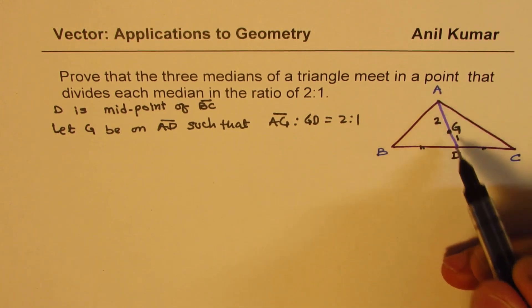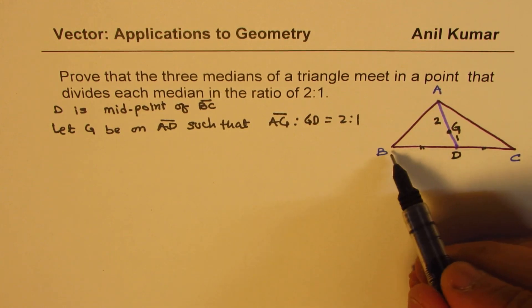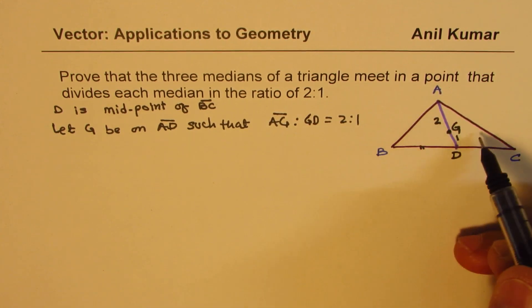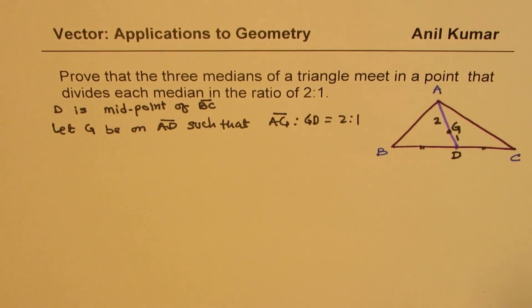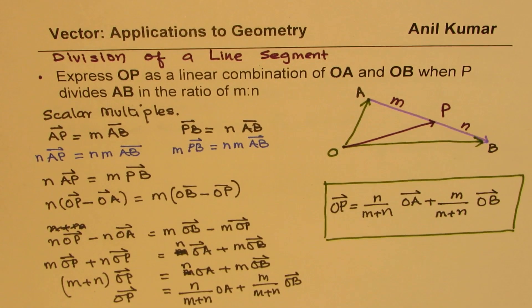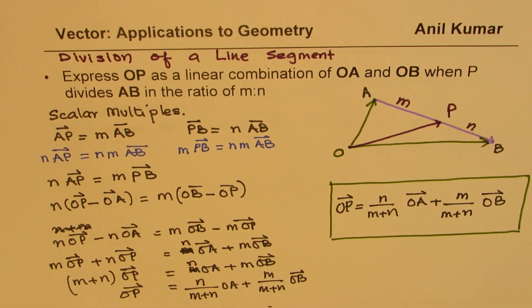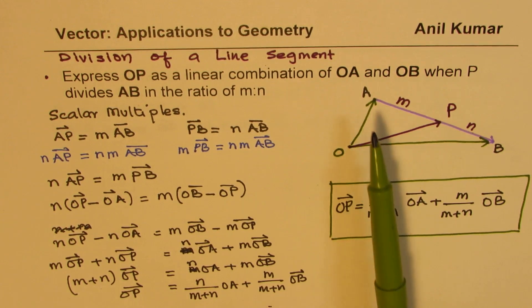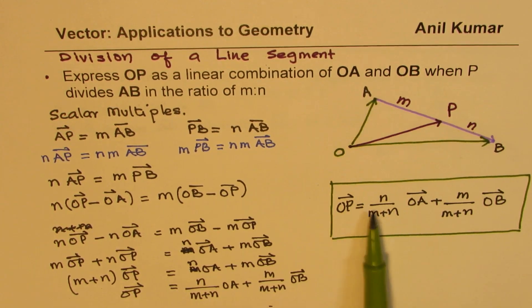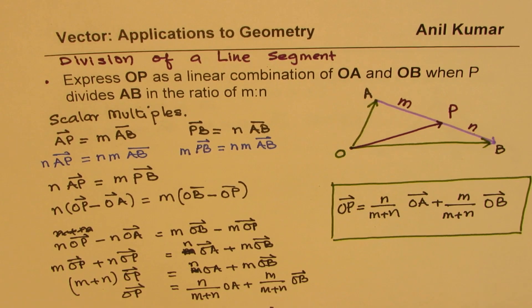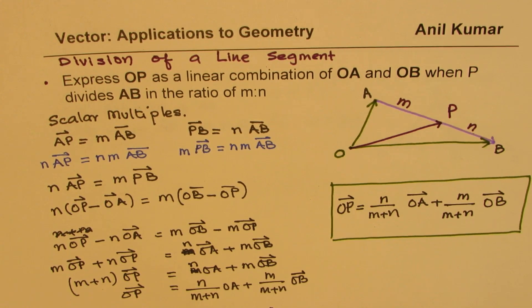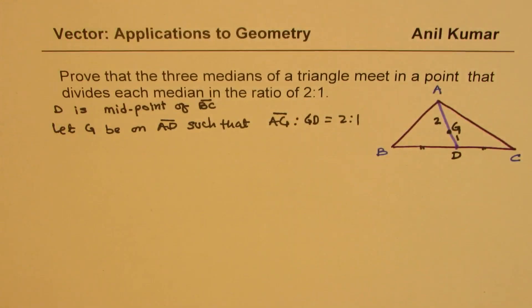What we need to prove here is that for all such medians that G point is common. To prove it, what we will do here is as we did in the derivation of our formula for the line segment, we'll consider an external point O and repeat this formula and find what is OG.